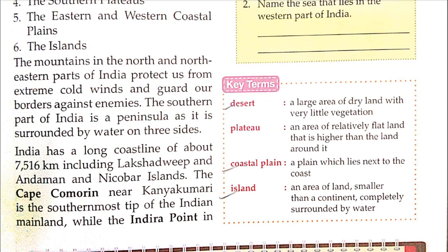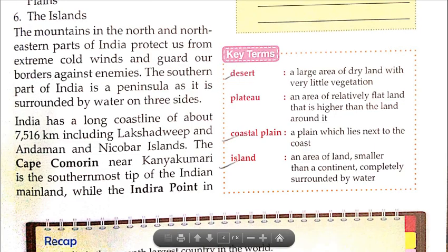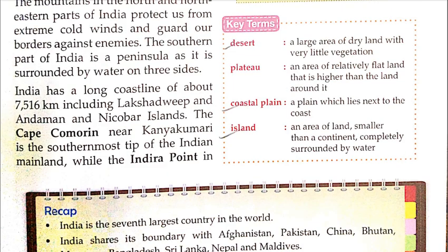Key terms: Desert — a large area of dry land with very little vegetation, meaning a region where there is no water, making it dry, and farming is not possible. Plateau — an area of relatively flat land that is higher than the land around it, meaning a raised flat area above the surroundings. Coastal plain — a plain which lies next to the coast, meaning the flat land area near the sea. Island — an area of land smaller than a continent, completely surrounded by water.